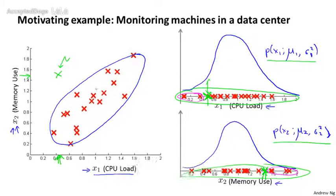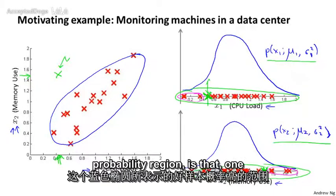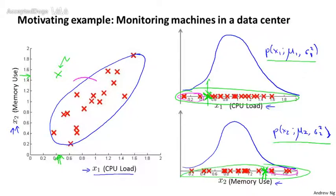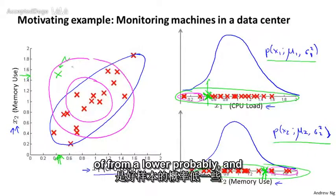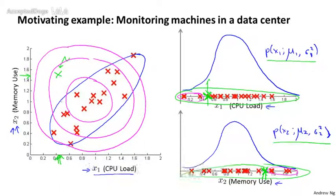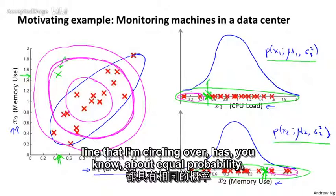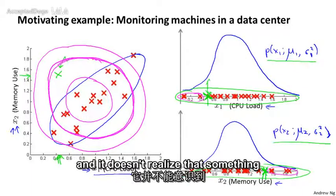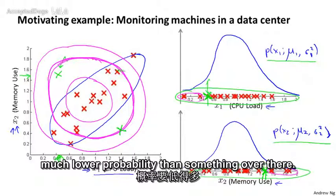And it turns out that what our anomaly detection algorithm is doing is it's not realizing that this blue ellipse shows the high probability region. Instead, what it thinks is that examples here are high probability, and examples the next circle out are somewhat lower probability, and examples here are even lower probability. And somehow, things that are green across there is pretty high probability. And in particular, it tends to think that everything in this region, or everything on the line that I'm circling over has about equal probability. And it doesn't realize that something out here actually has much lower probability than something over there.